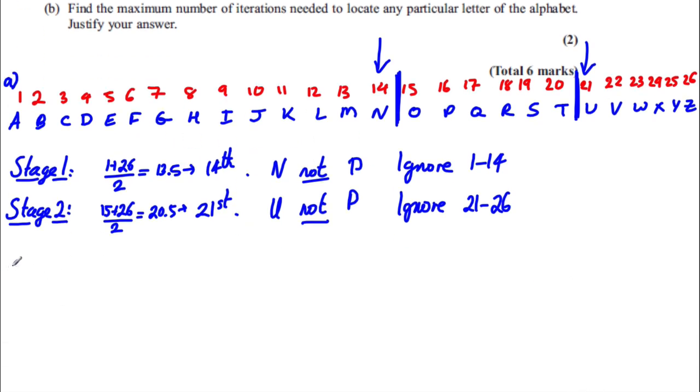So we're going to continue. Let's do stage 3 now. It's stage 3. So now we've got this part of the list left over. So we're going to add the first 15 plus 20 divided by 2. And that's 35 divided by 2, which is 17.5. Which is the 18th term. Now the 18th term is R. So that's R is not P that we're looking for. So we're going to ignore everything 18 and above. So we're going to ignore 18 to 20.